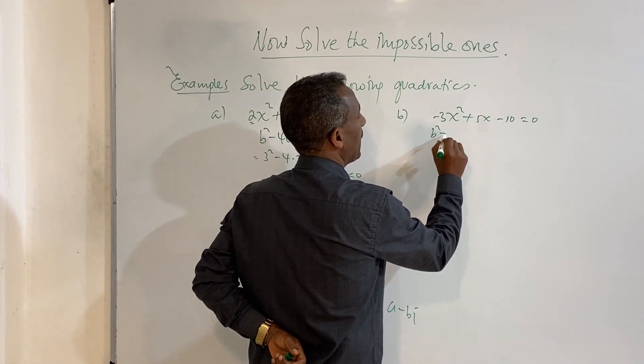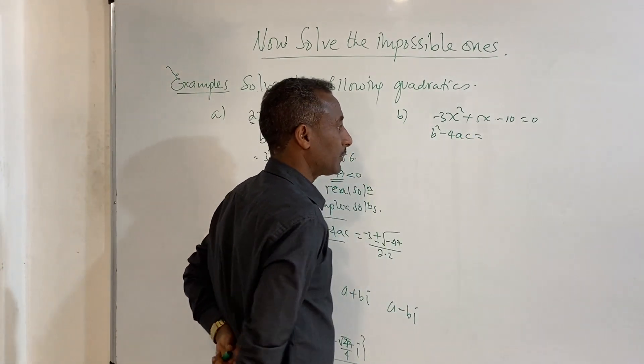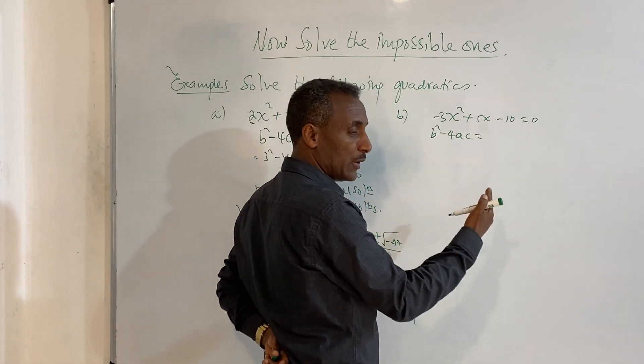B squared minus 4ac. We're checking if there's a real root or not.